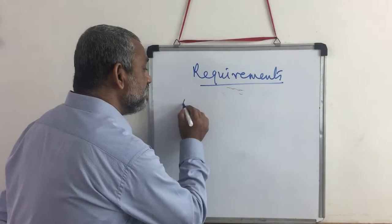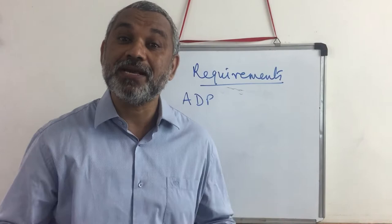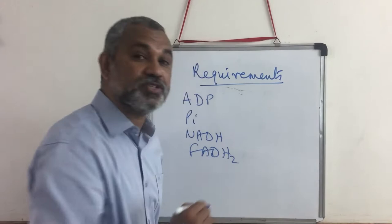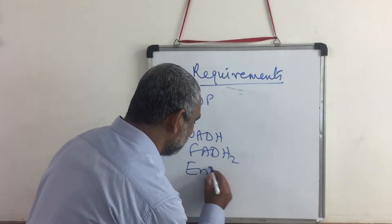Prior to understanding the electron transport system, we need to know its requirements. The requirements for carrying out electron transport include ADP molecules, because ultimately we need to make ATP, inorganic phosphate, NADH, FADH2, and a whole set of enzymes and other proteins.